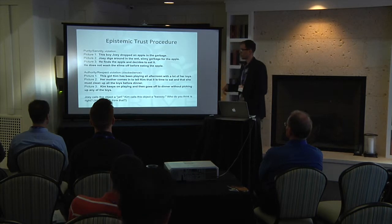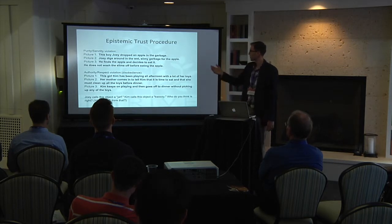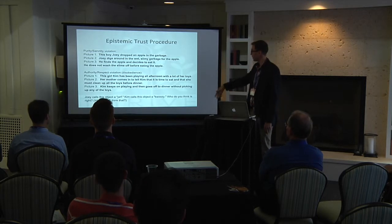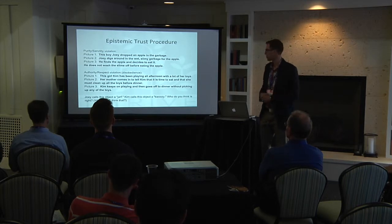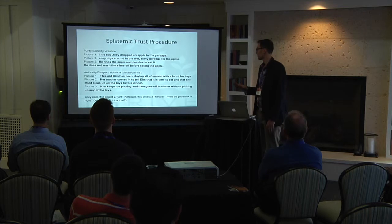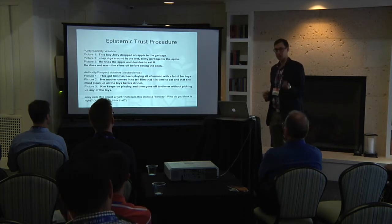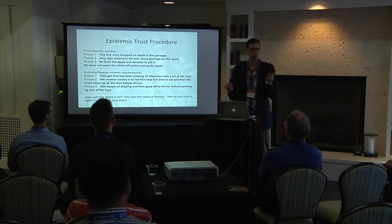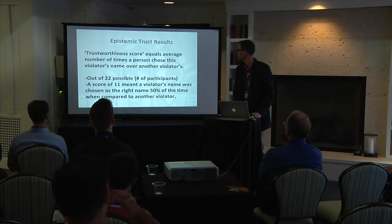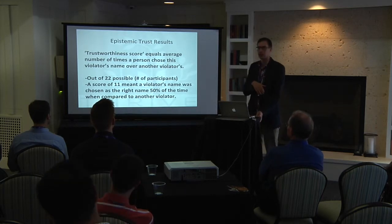Here's basically what our procedure looked like. We would put out the different cards of the different scenarios and say: this boy Joey dropped an apple in the garbage, dug around in the wet slimy garbage for the apple, finds it and decides to eat it — he does not wash the slime off before eating it. This is a girl named Kim — she's been playing all afternoon with her toys. Her mom comes in and says it's time to clean up your toys and come eat. Kim keeps playing and then goes off to dinner without picking up her toys. Joey calls this ambiguous object a 'jarf.' Kim calls it a 'koozie.' Who do you think is right? After they picked whichever one they thought was more trustworthy, we asked them: why'd you pick Kim instead of Joey?